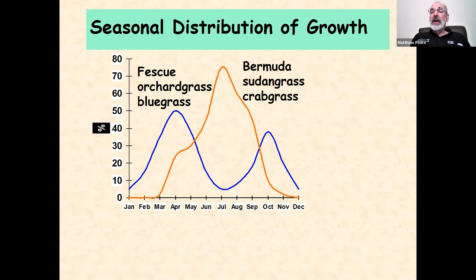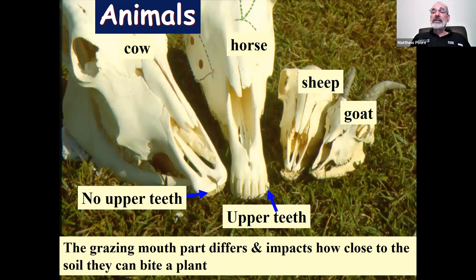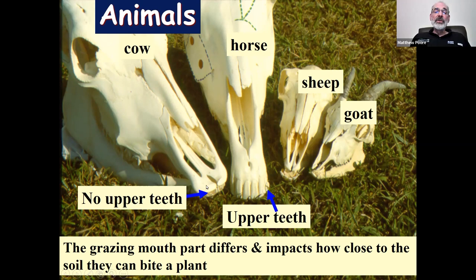Turning to the major animal points: we have grazing livestock, and whether it's cows, sheep, or goats, we need to understand how they feed and what they eat. There are big differences in the mouth structure of these different animals. Ruminants — cows, sheep, and goats — have no teeth on the top, whereas a horse has teeth on both the top and bottom. This has implications for how they graze. The width of the muzzle is also important: animals with a wide muzzle can't be as selective, while sheep and especially goats have very narrow mouths that allow them to more easily select specific parts of plants.